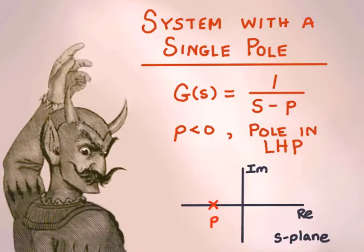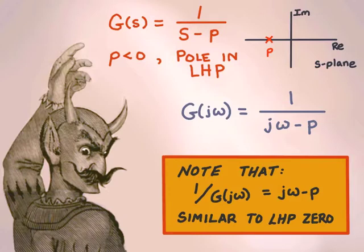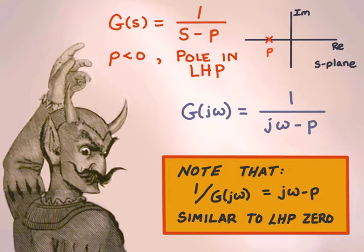So we've now tackled the case of a system with a single zero, either in the left half plane or the right half plane. Let's now turn our attention to a system with a single pole. So this system would be g of s equals 1 over s minus p. The pole is at p on the real axis, and we'll start by assuming p is less than 0 — a left half-plane pole, making the transfer function stable. We'll substitute j omega for s, giving g of j omega equals 1 over j omega minus p. Note that 1 over g of j omega equals j omega minus p, which looks just like the left half-plane zero case.